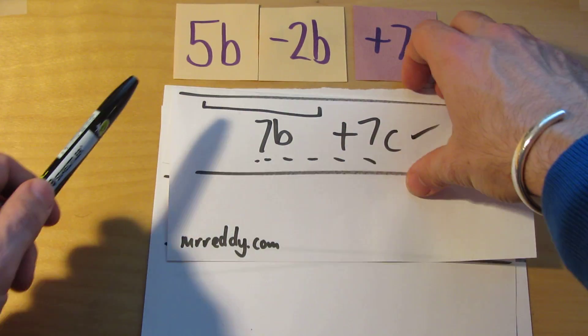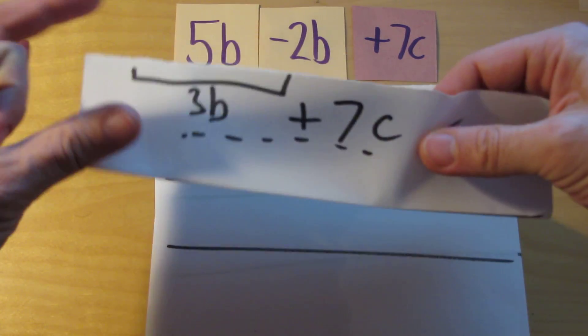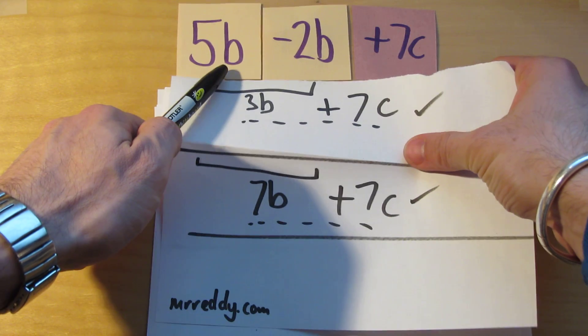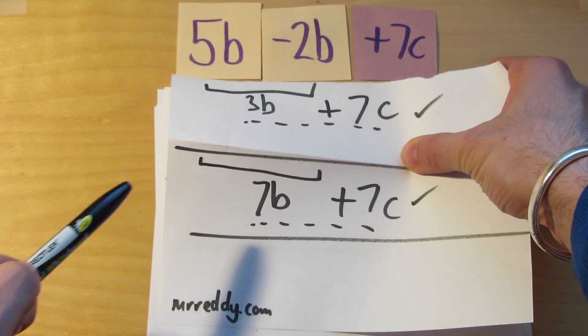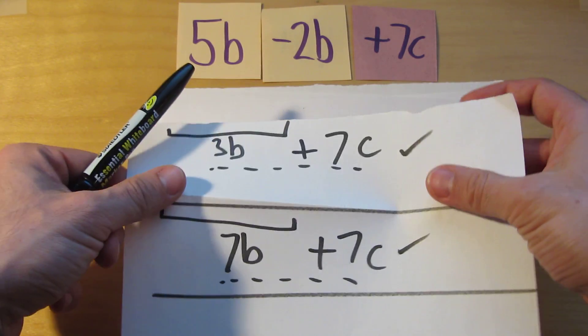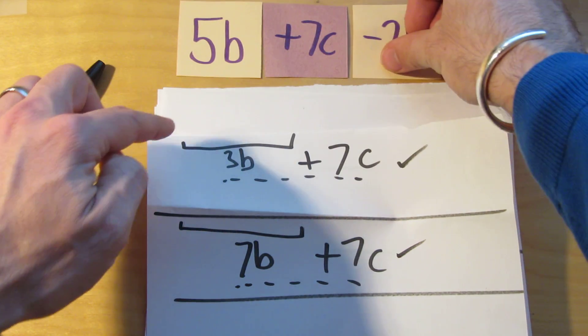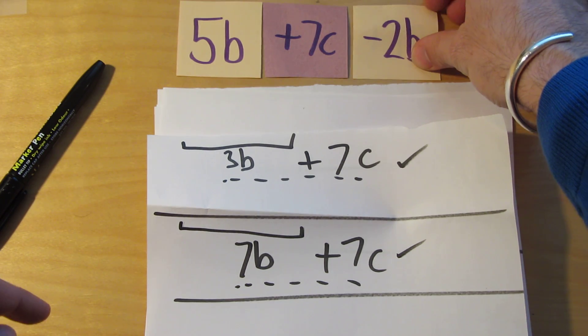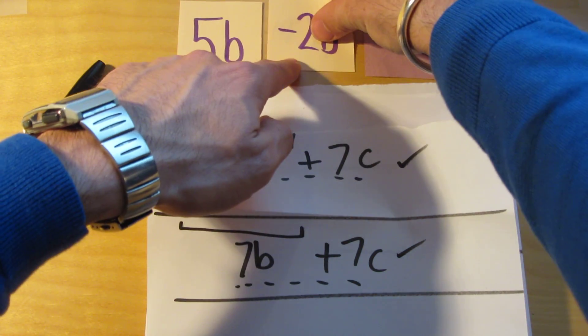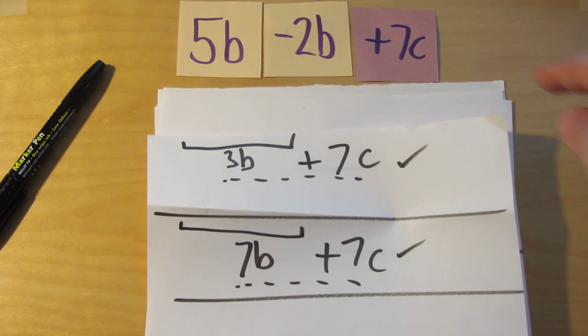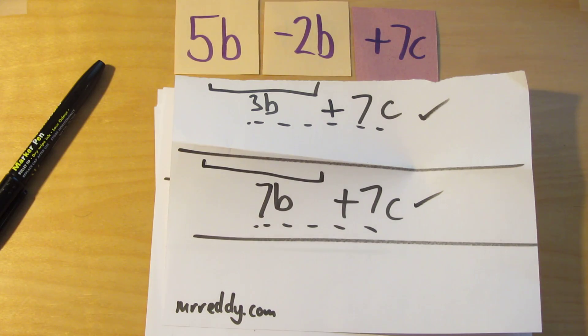So bring these two together and leave that one by itself. Well then we had something very much like the expression that we first started with. So 5b take away 2b gives us 3b and we've still got 7c to add on. So let's just recap. Bring the terms together that have the same variable. So in this case we're going to bring the b's together and then simplify. So 5b take away 2b is 3b. Still got 7c to add on.